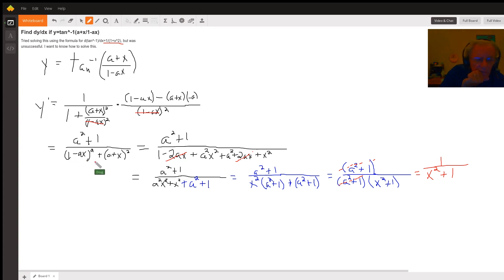So I squared this term, this binomial, 1 minus 2ax plus a squared x squared. Squared this binomial, a squared plus 2ax plus x squared. Notice that the minus 2ax and the plus 2ax combine to 0. So I've got a squared x squared plus an x squared plus a squared plus 1.